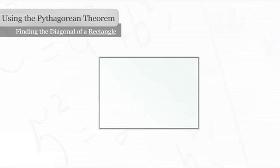We can also use the theorem to find the length of a diagonal of a rectangle. If we draw a diagonal line from one corner to another of this rectangle, the diagonal divides it into two congruent right triangles.